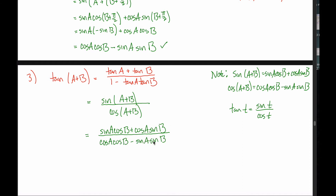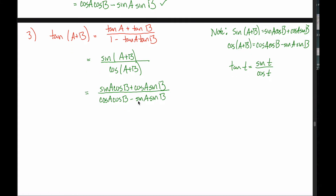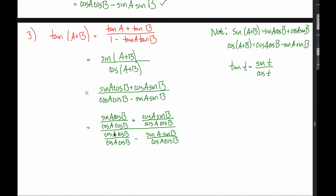That doesn't look anything like the target formula. How am I going to change this expression in green into the one in red? Well, the trick here is that since tangent equals sine divided by cosine, what I want to do is change all these sines and cosines into tangents. Maybe I can get rid of a bunch of stuff if I divide each of these four terms by cosine of a times cosine of b.